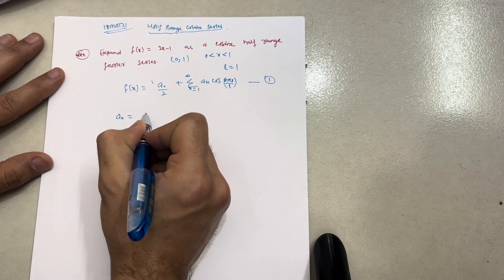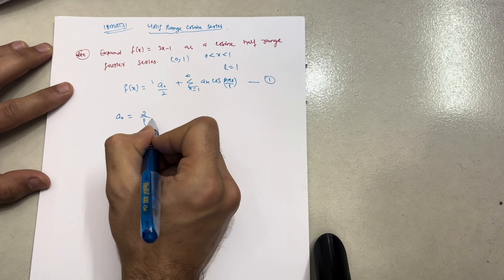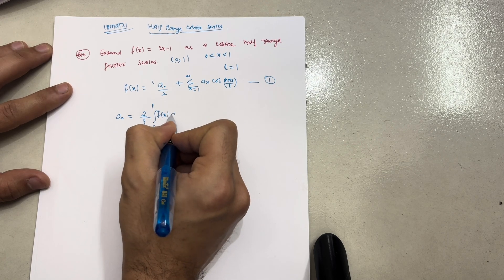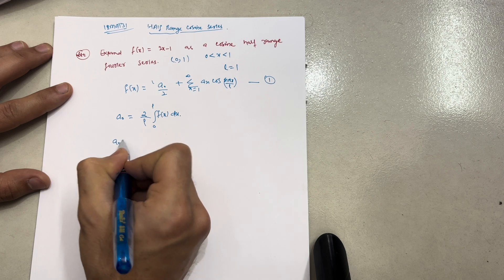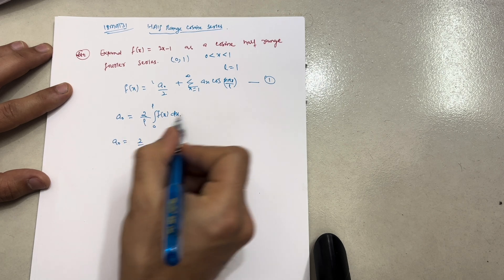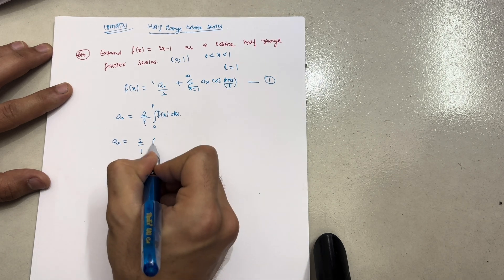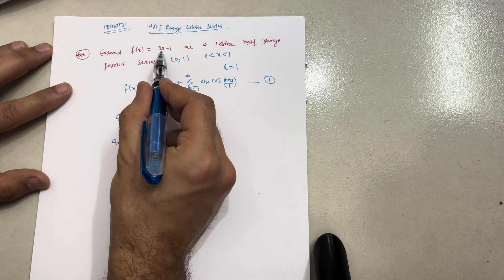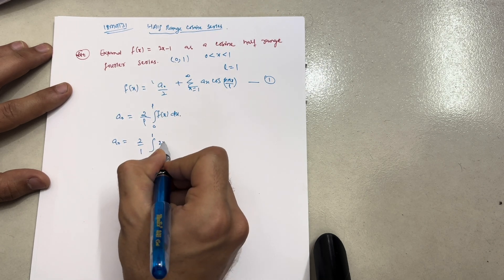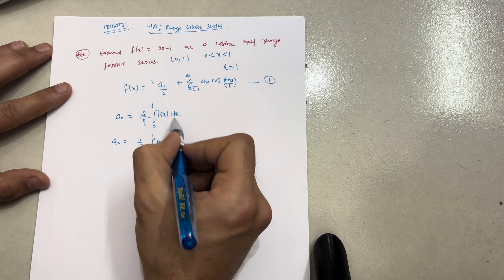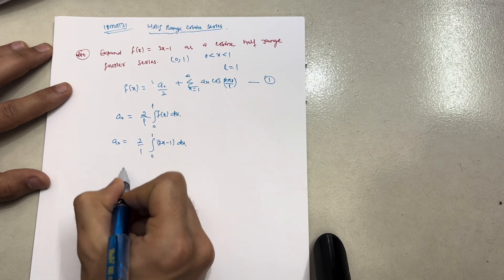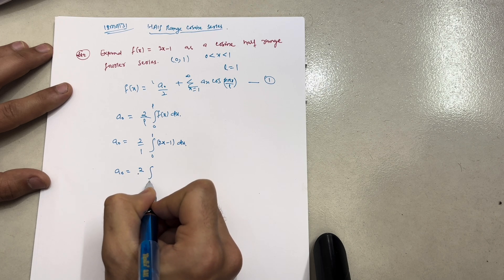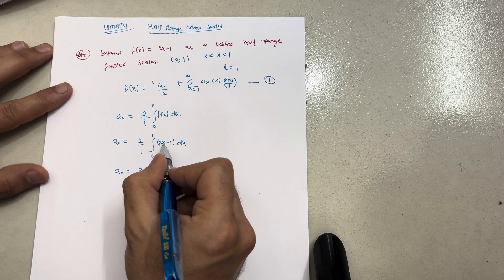a₀ is equal to (2/L) times the integral from 0 to L of f(x) dx. With L = 1, this becomes (2/1) times the integral from 0 to 1 of f(x) dx. The given function f(x) is 2x − 1, so a₀ = 2 times the integral from 0 to 1 of (2x − 1) dx.